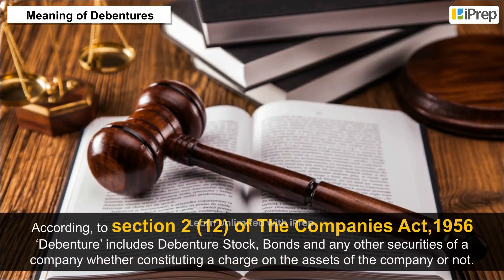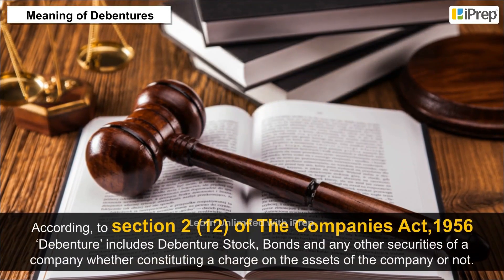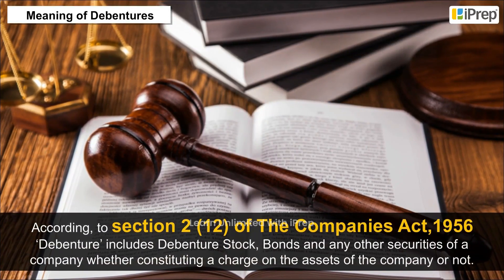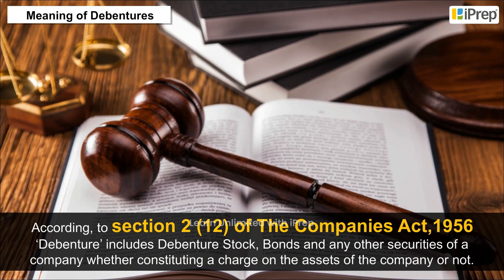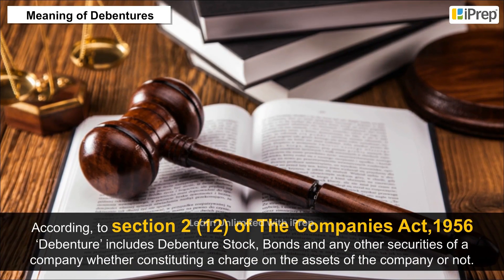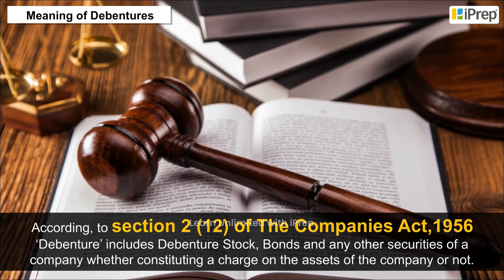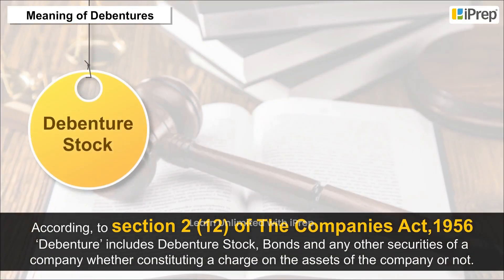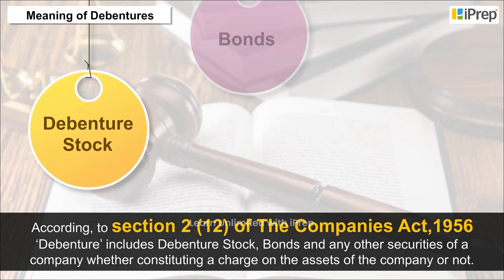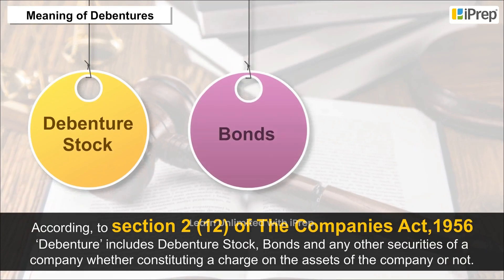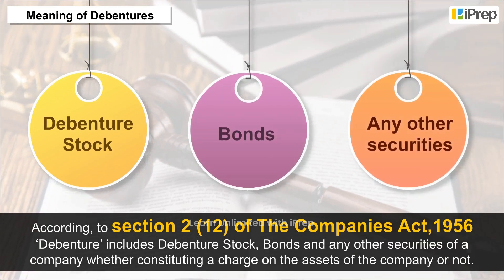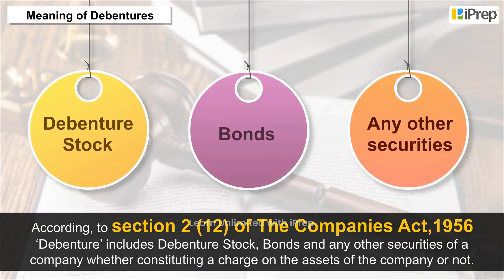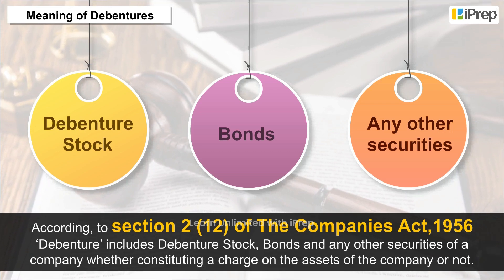According to Section 2, Subsection 12 of the Companies Act 1956, debenture includes debenture stock, bonds, and any other securities of a company, whether constituting a charge on the assets of the company or not.